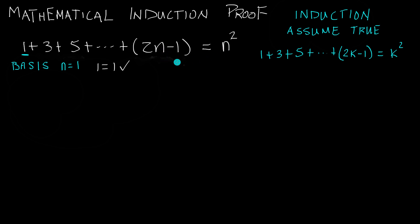What we're doing with the induction step is rewriting the entire statement, but wherever there's an n we're replacing it with a k. We have k on the left and k squared on the right. k represents some arbitrary number, and we're just going to assume that is true for now.